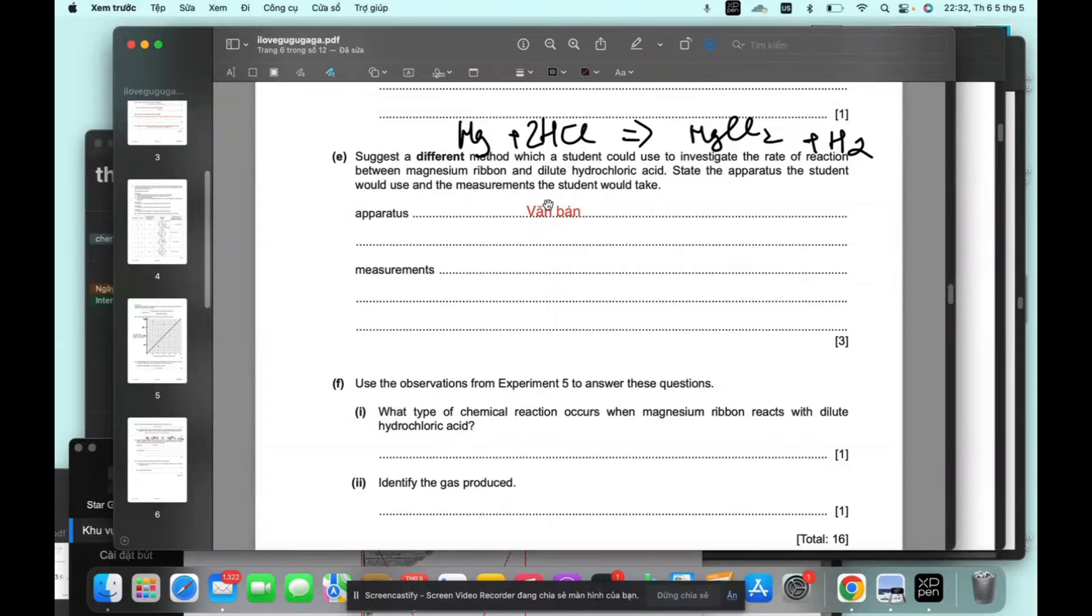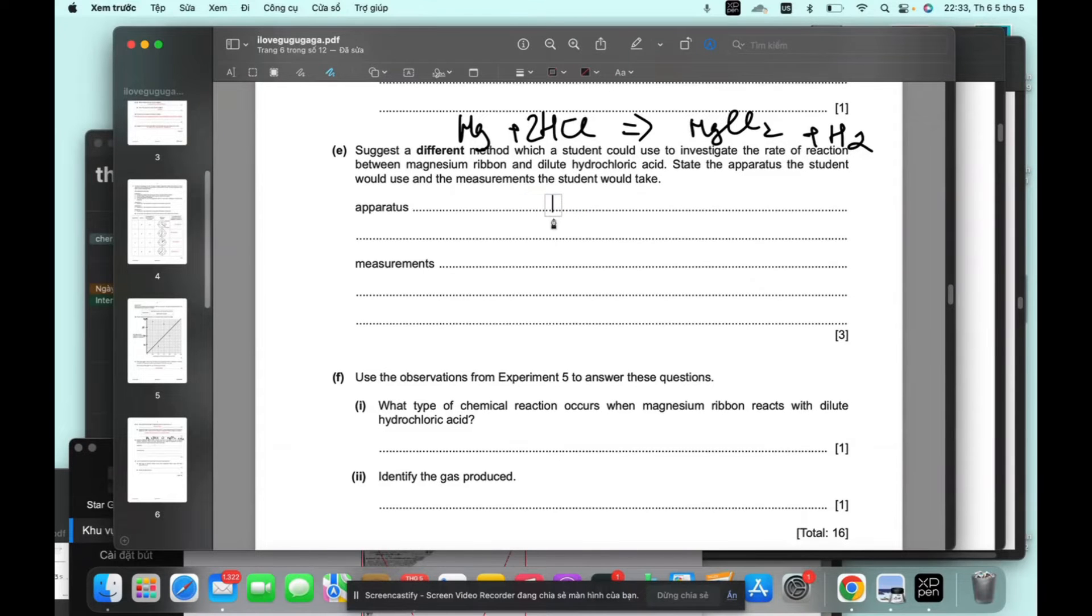Perfect. So here we could use something called a gas syringe. We collect gas. Gas syringe. When the magnesium ribbon is dropped in HCl we measured time. Time for H2, H2 gas to fill syringe.